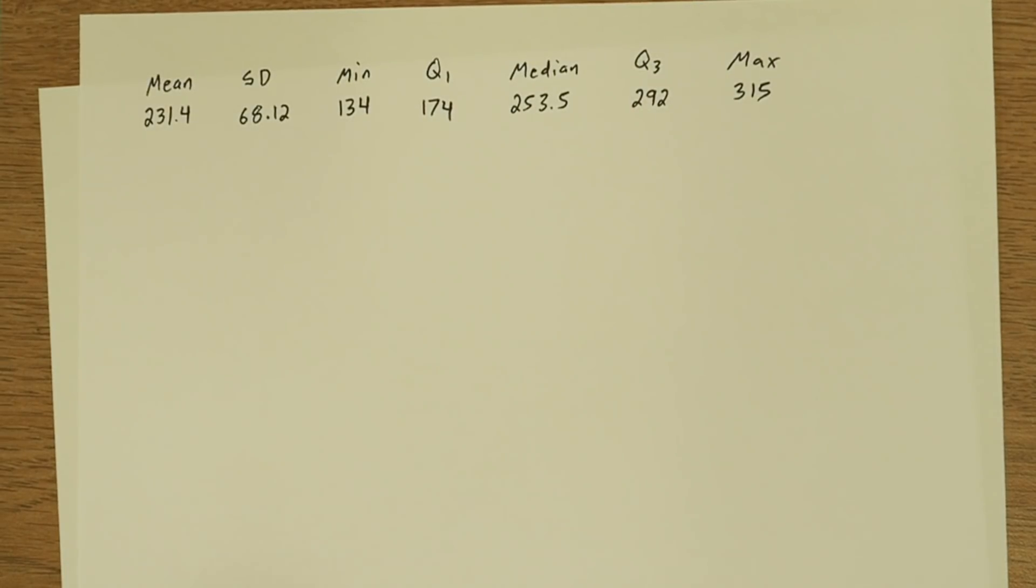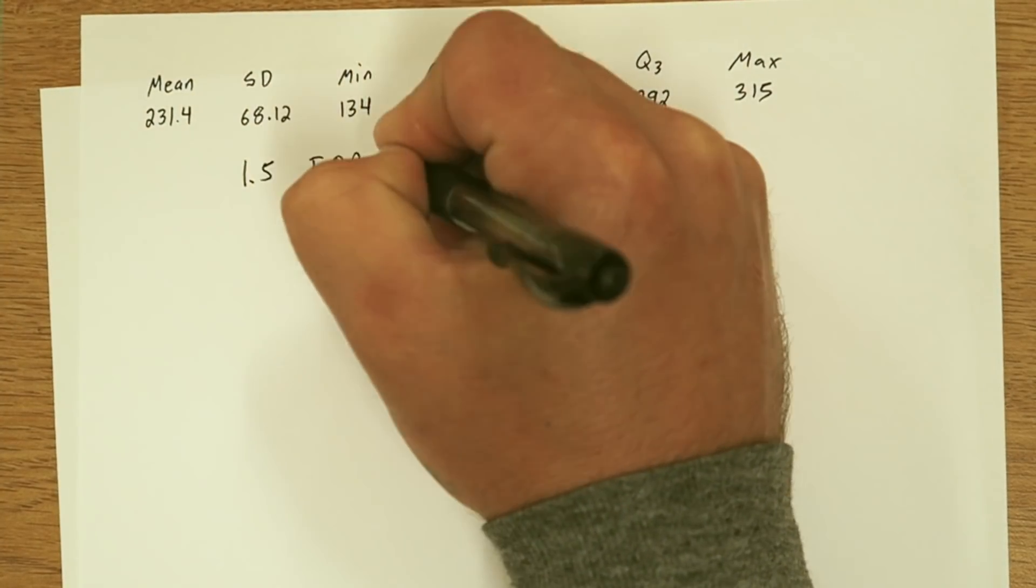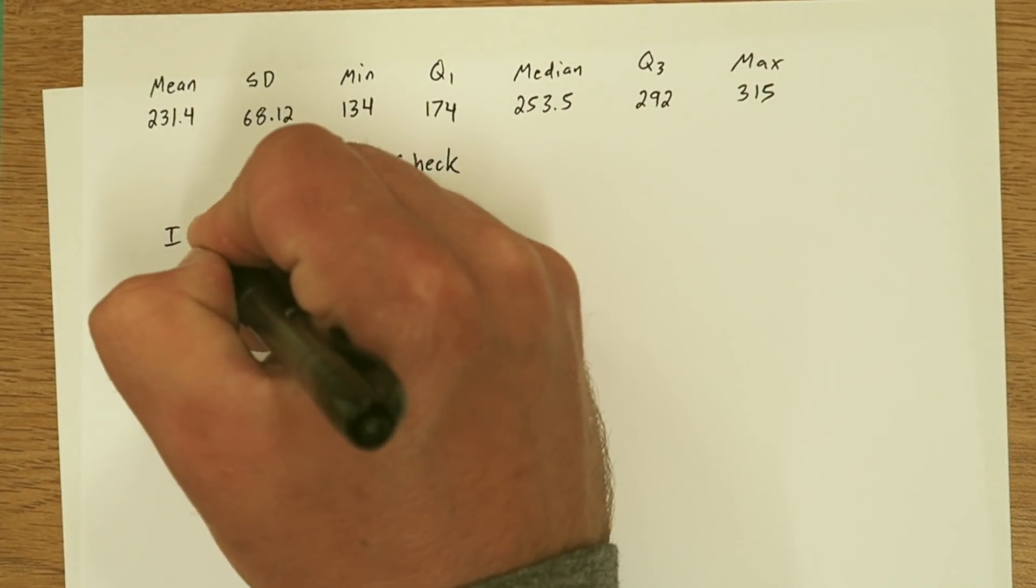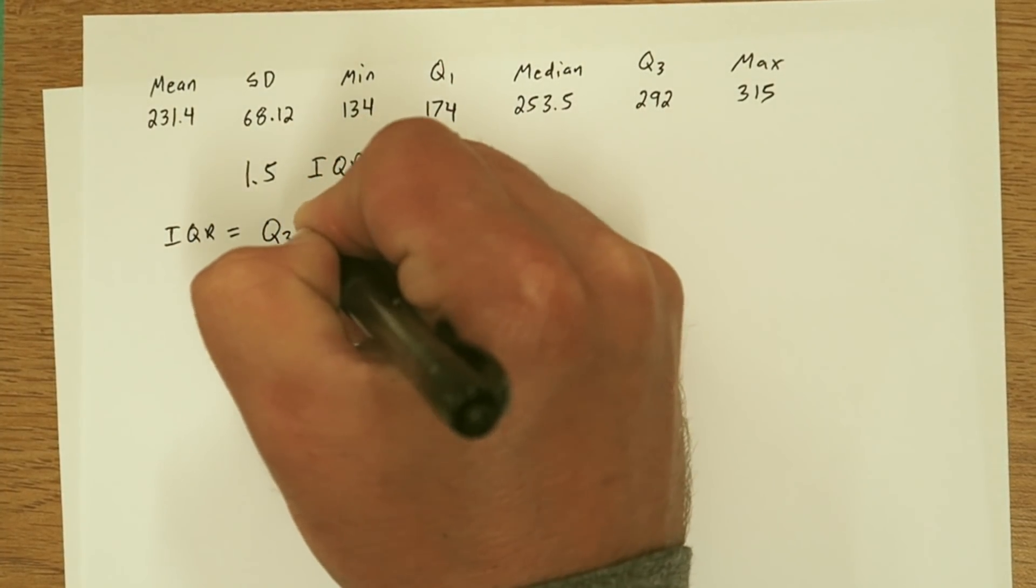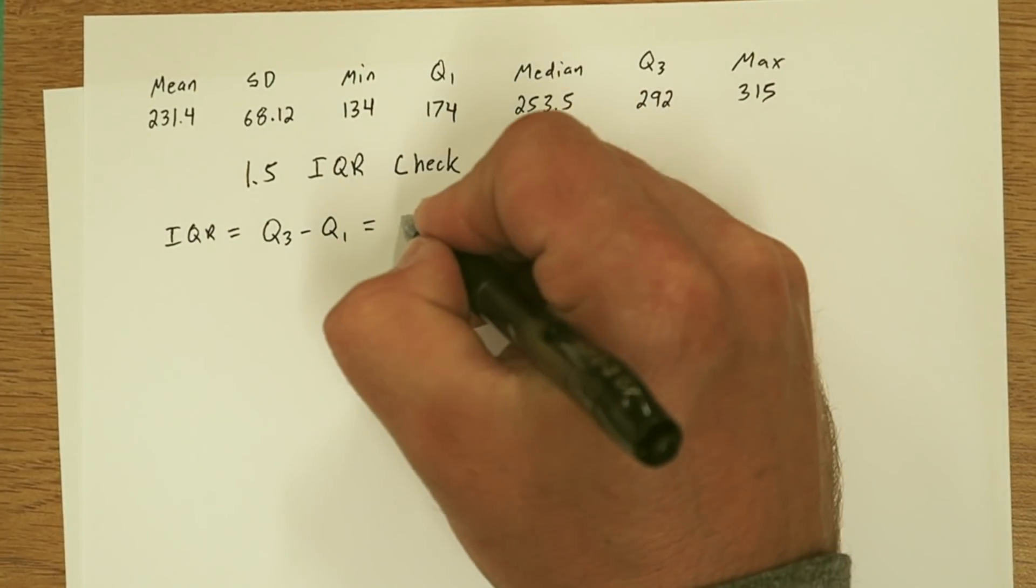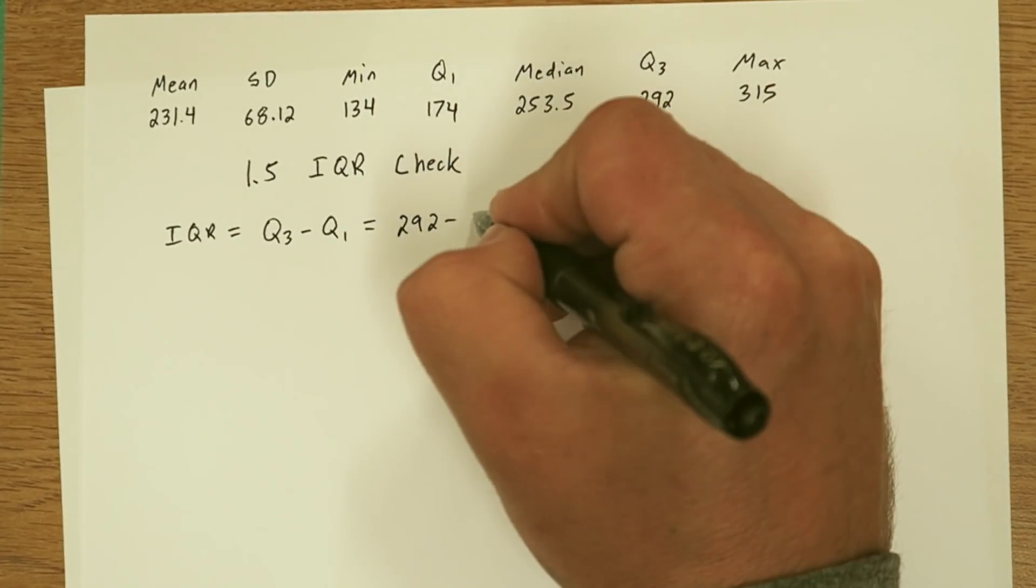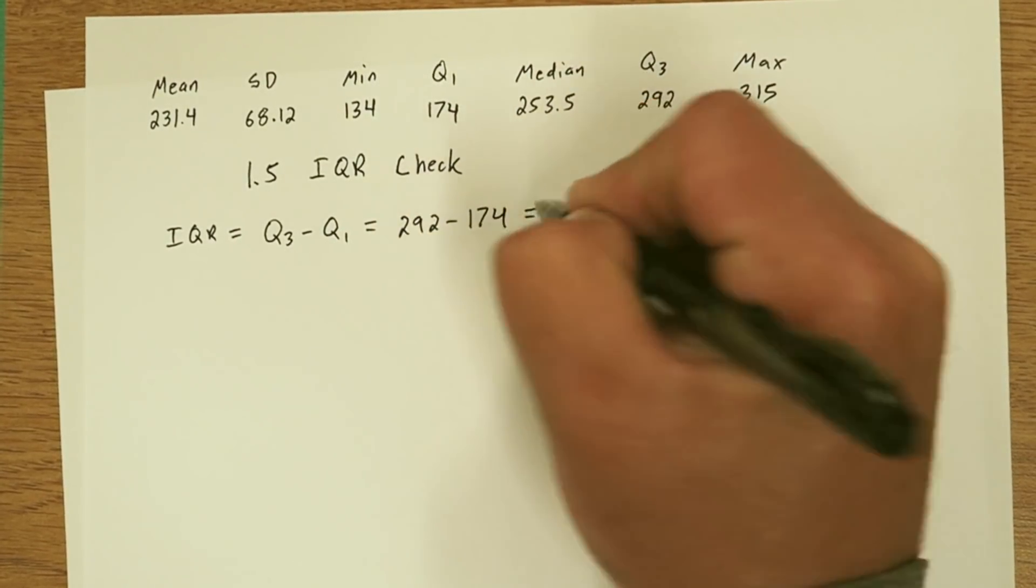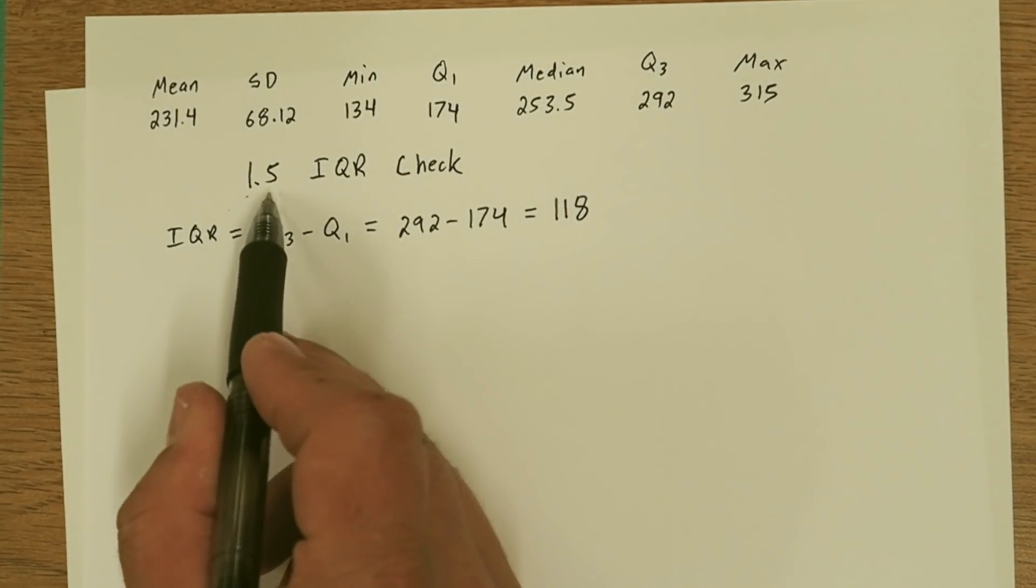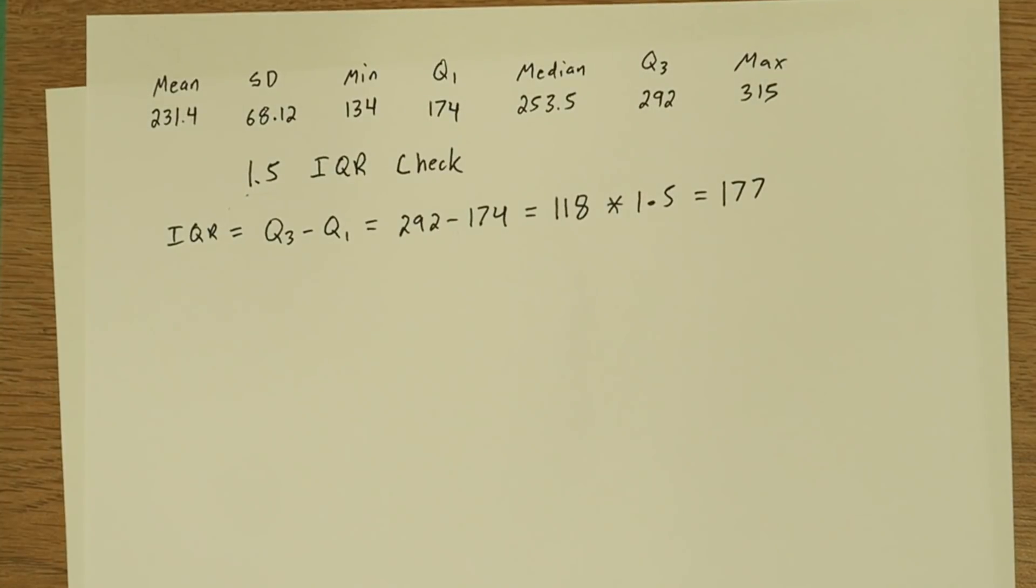Alright, in part B, they give us some summary information and they say use this to figure out if there's any potential outliers. So a great way to check for outliers is the 1.5 IQR check. So here's what we do. We first need to figure out what the IQR is. IQR is quartile 3 minus quartile 1. Both of those are given to us in the data. So 292 minus 174, which turns out to be 118. Now what we need to do is multiply that by 1.5, and that gives us 177.